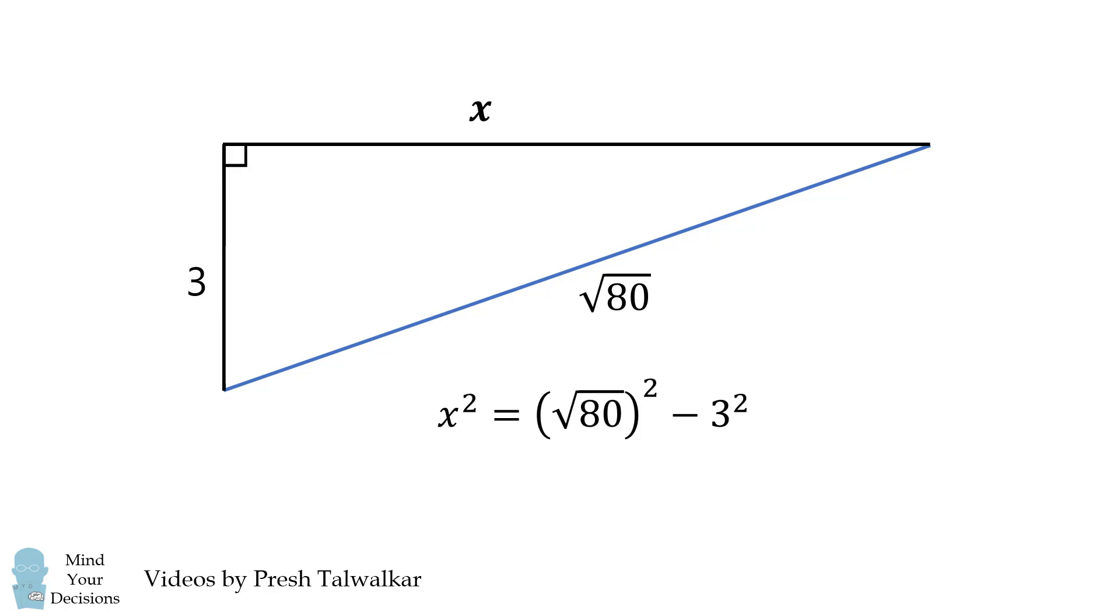We then have x squared is equal to the square root of 80 squared minus 3 squared, thus x squared is equal to 71. This means x is equal to the square root of 71, and that's the correct answer.